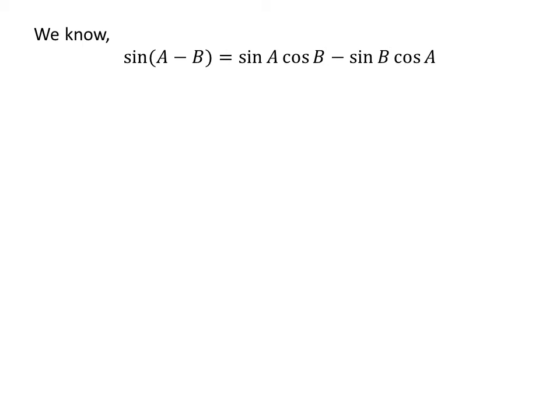As we know, the trigonometry identity sin of A minus B is equal to sin of A times cosine of B minus sin of B times cosine of A.